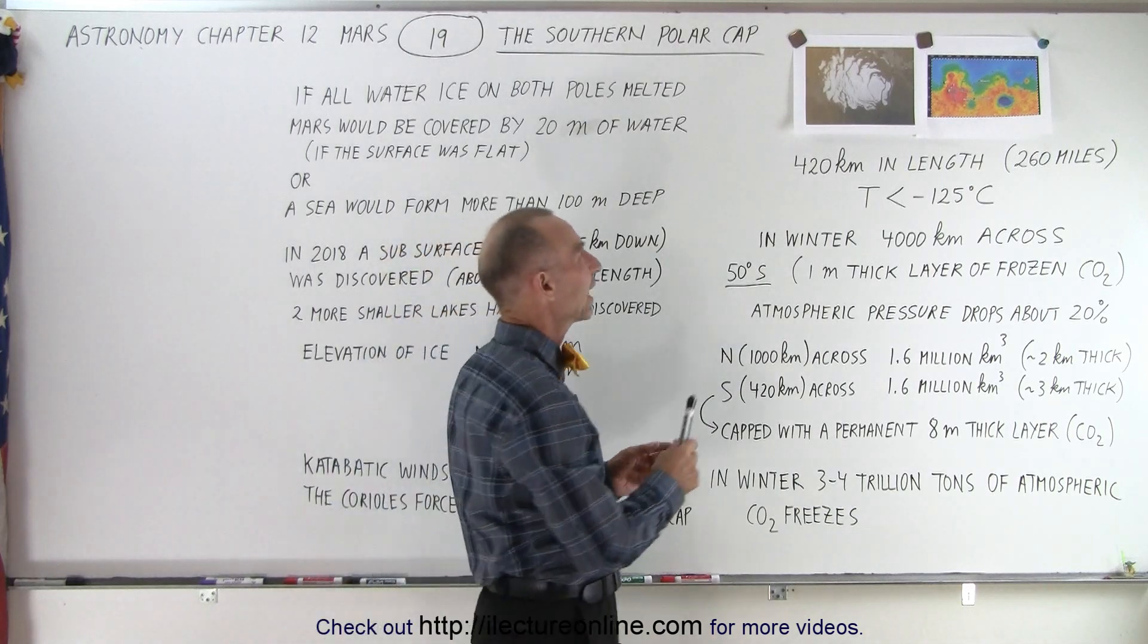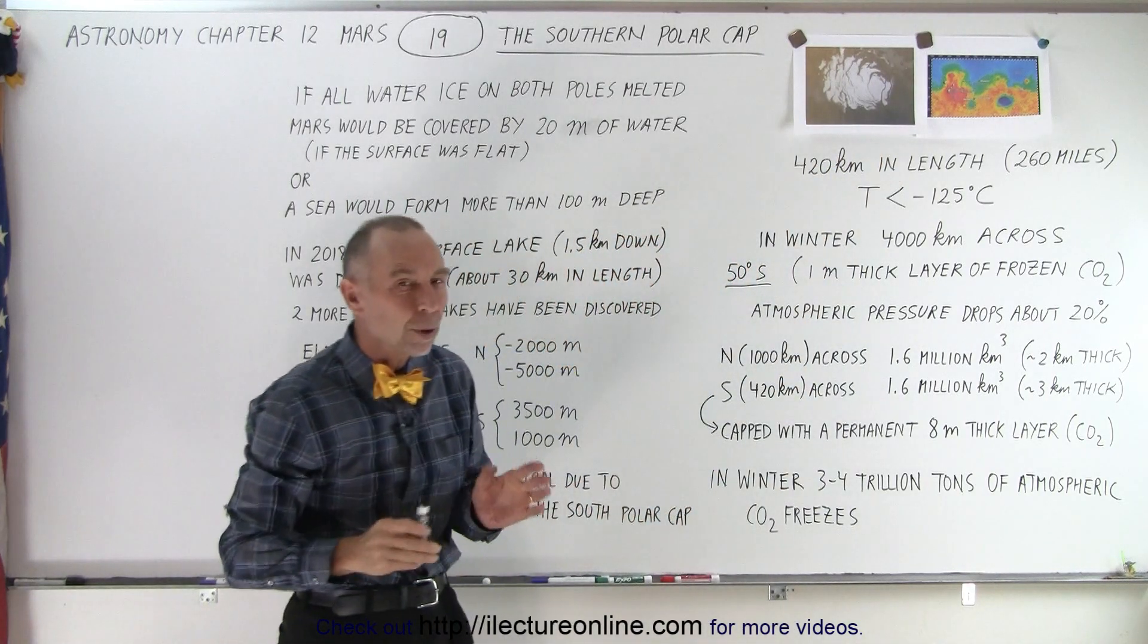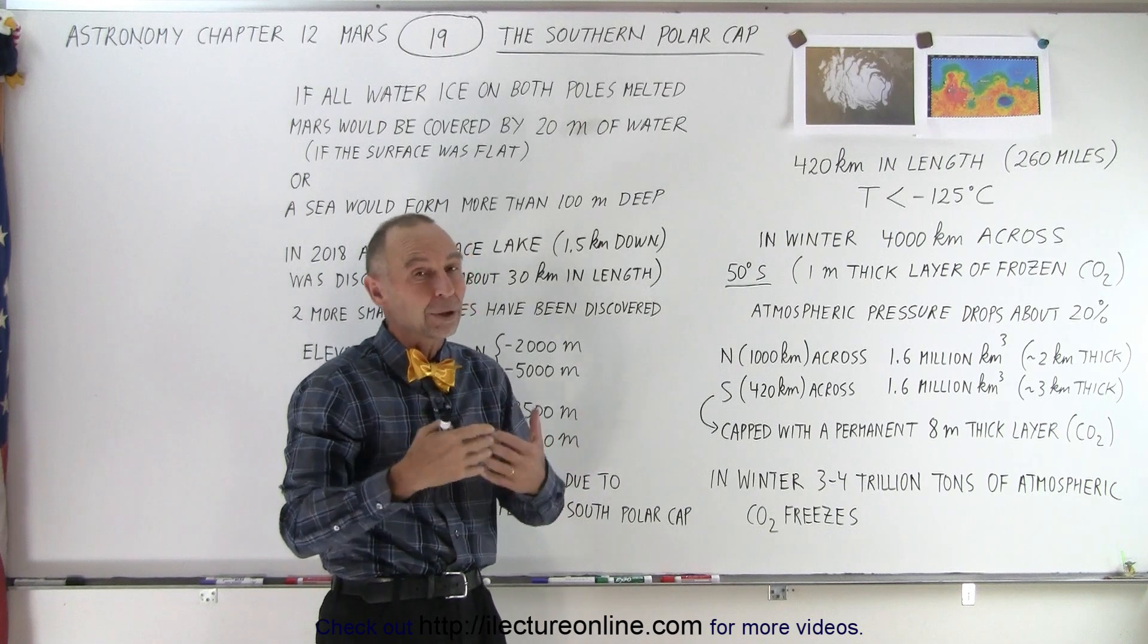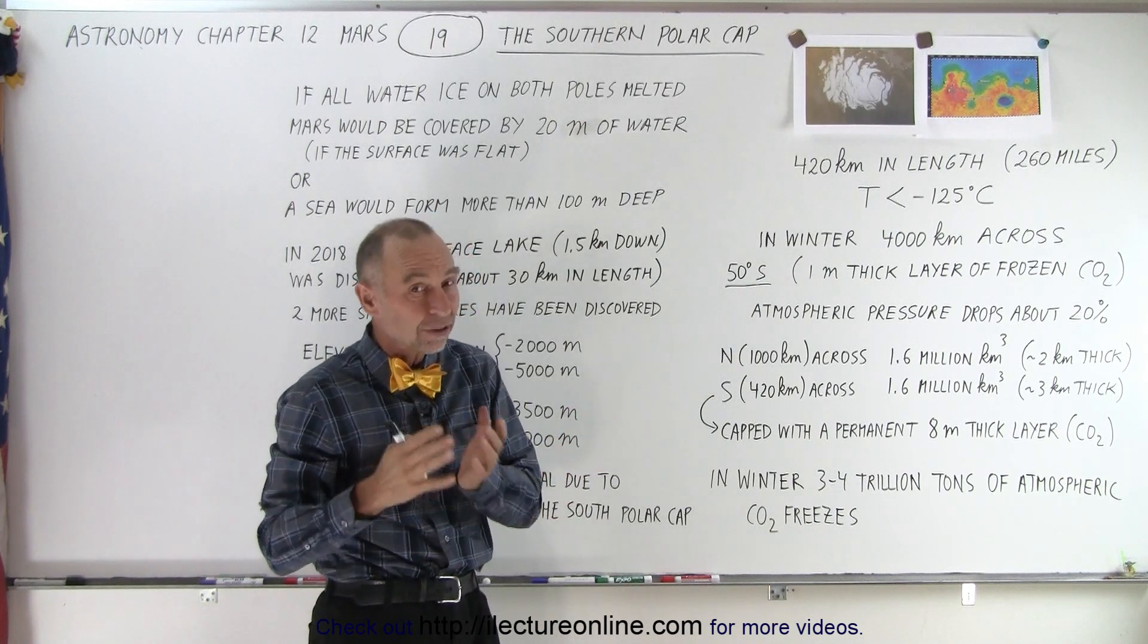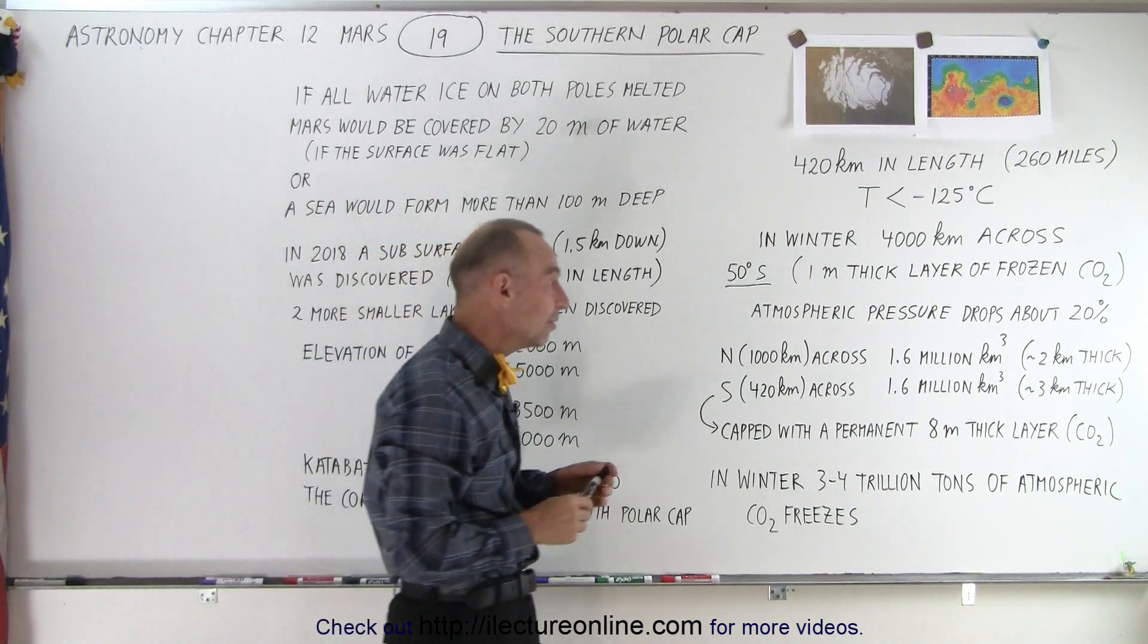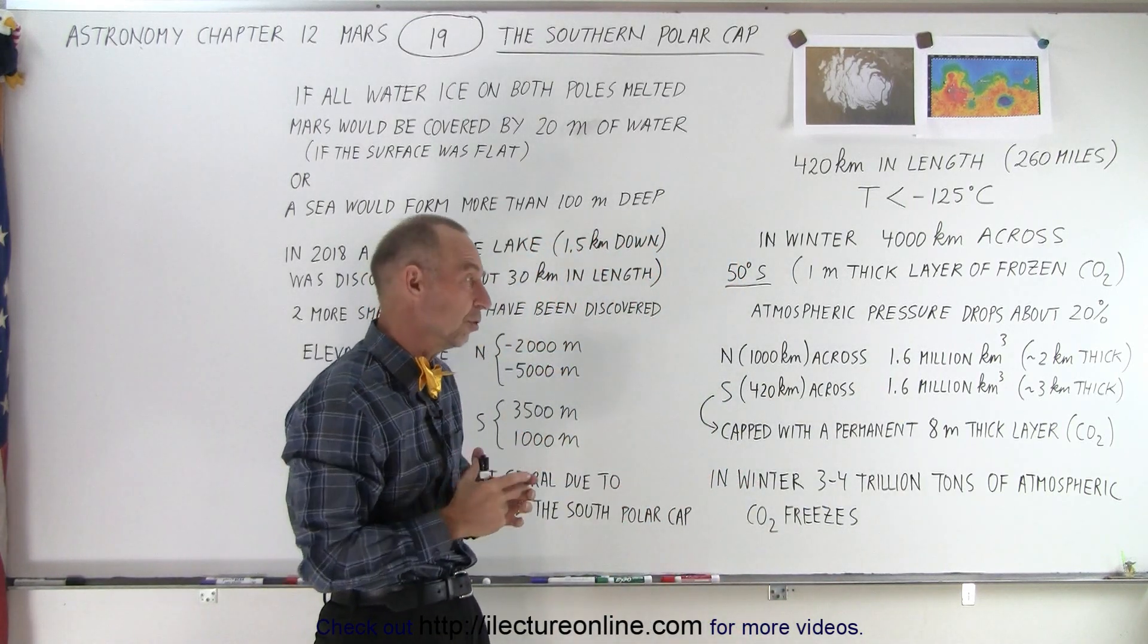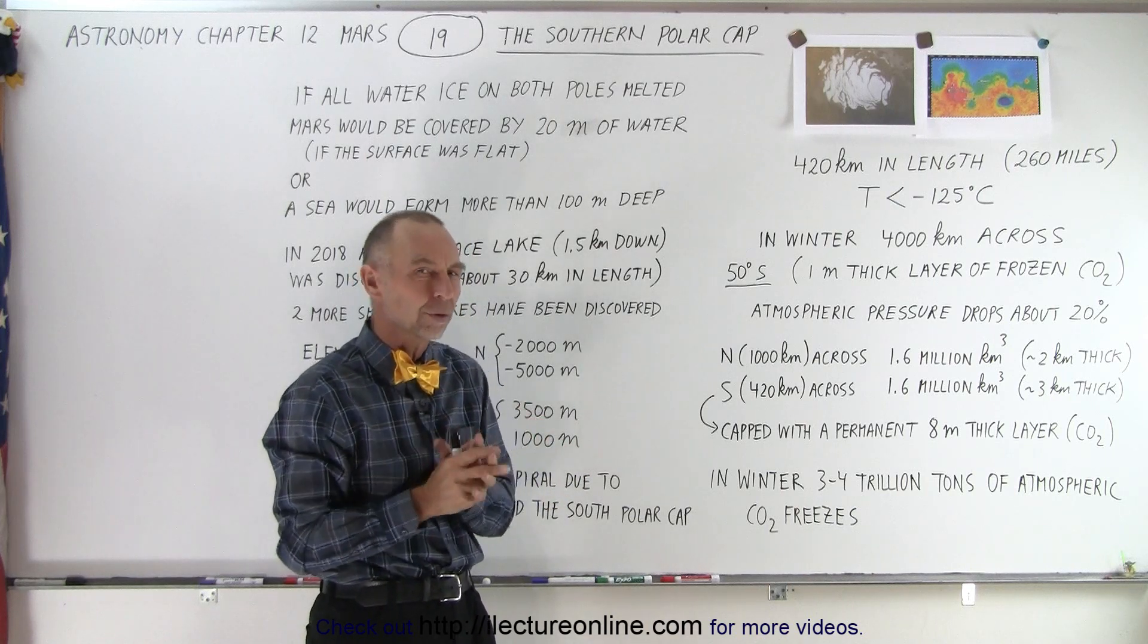Probably the reason why they were misled is because there's a permanent layer of carbon dioxide on top of the polar cap as much as 8 meters thick and the sensors probably couldn't pick up that there was water ice underneath. But now we know there's lots of water ice on the Southern Polar Cap as well and it's estimated to be about 1.6 million cubic kilometers. About the same amount as what you find in the Northern Polar Cap.